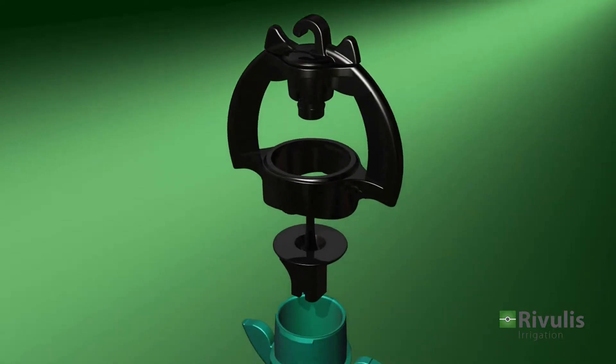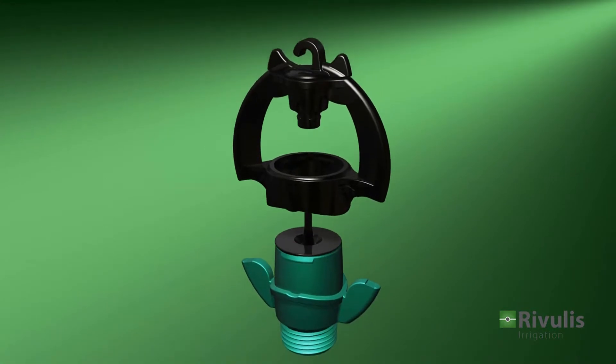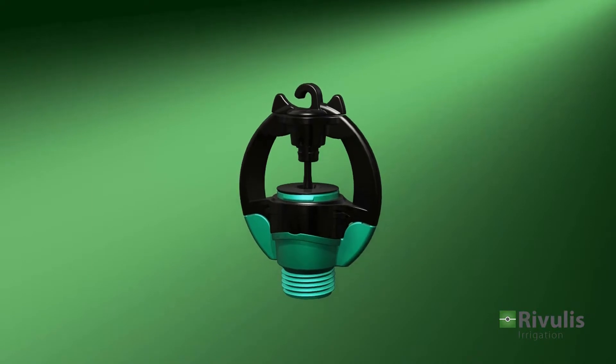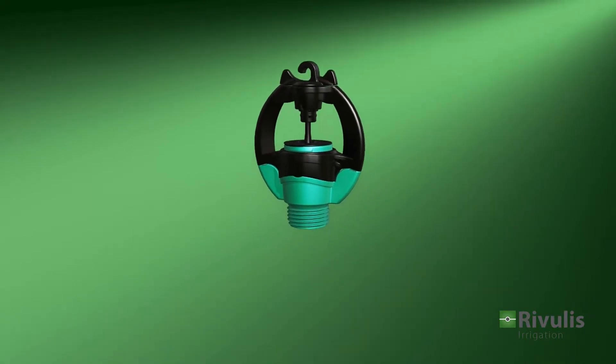The S2000 microsprinkler is simple to maintain and easy to assemble. Various assembly options make it a highly flexible sprinkler.